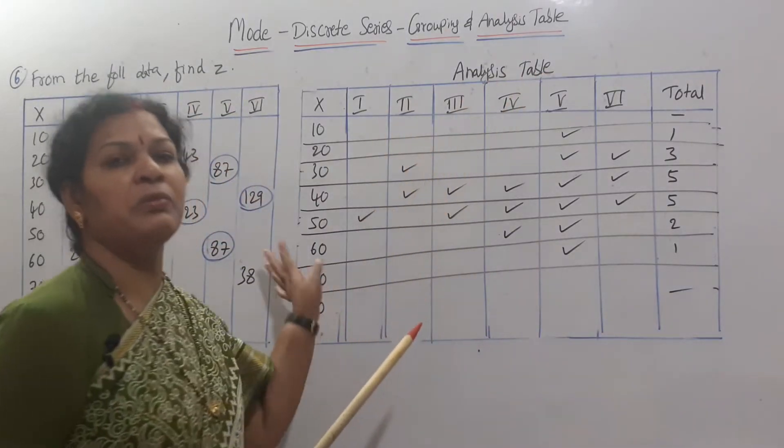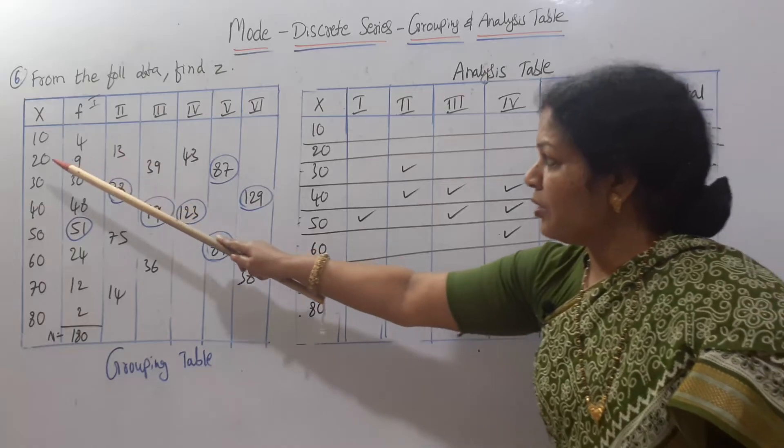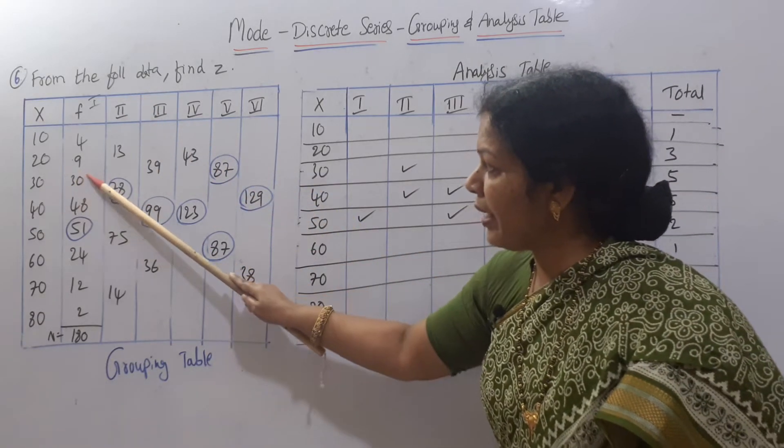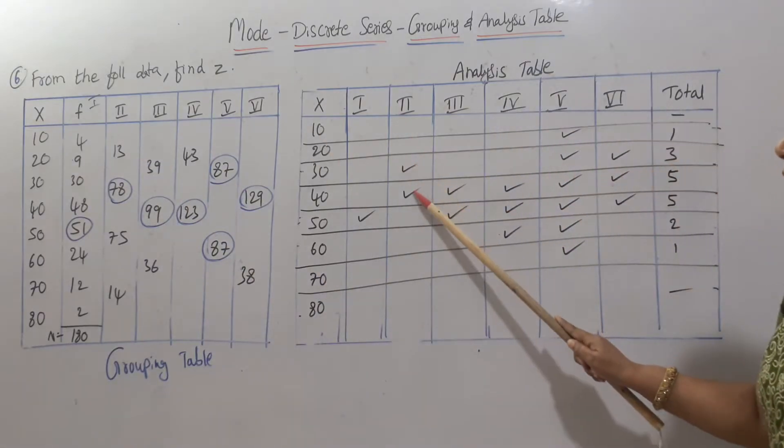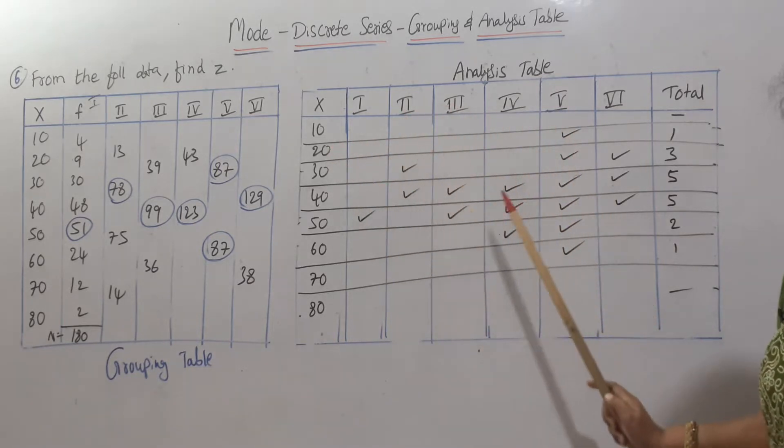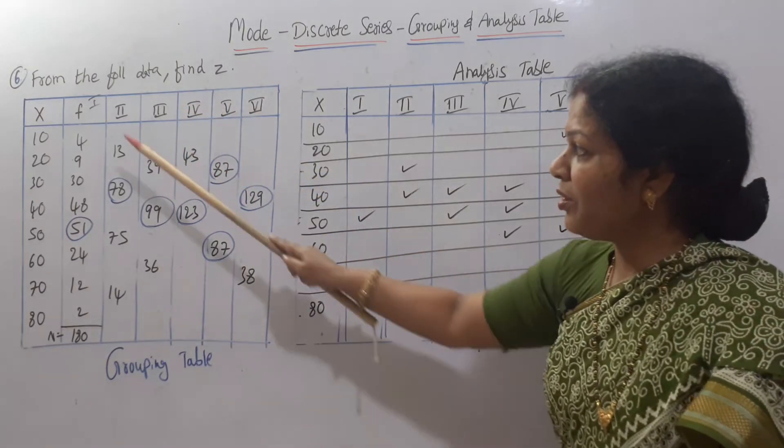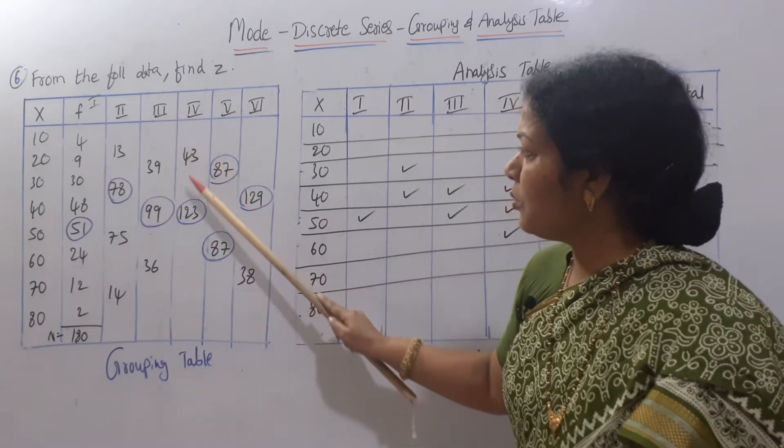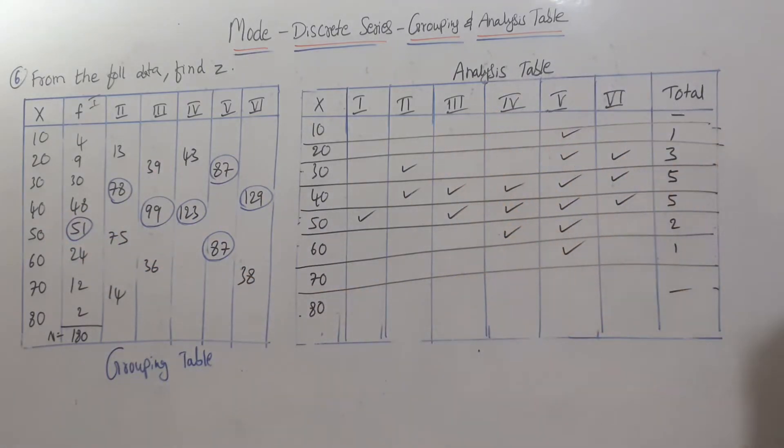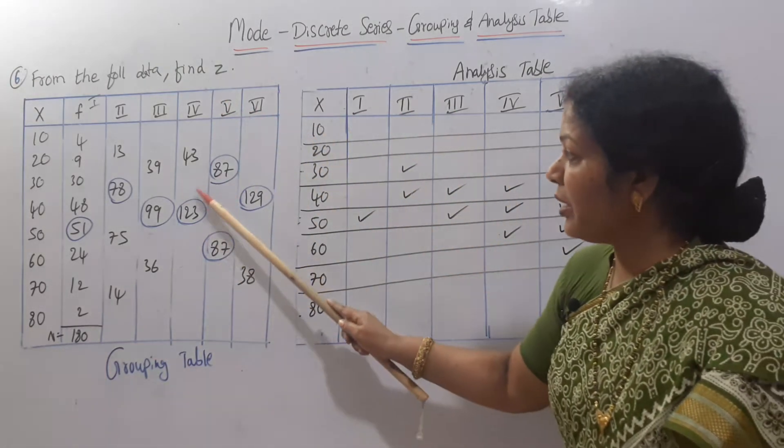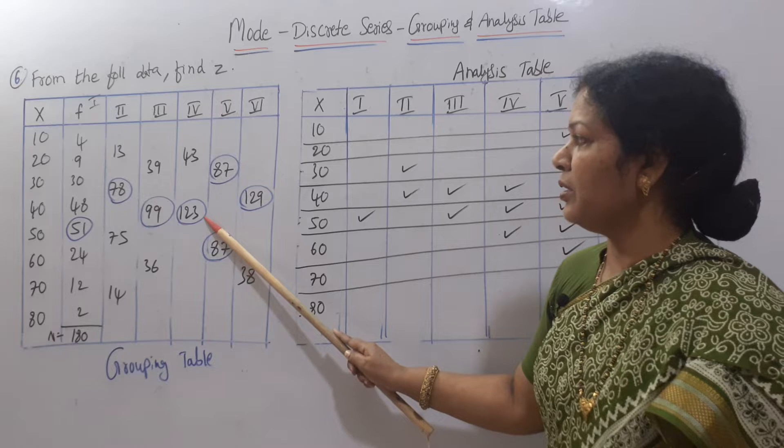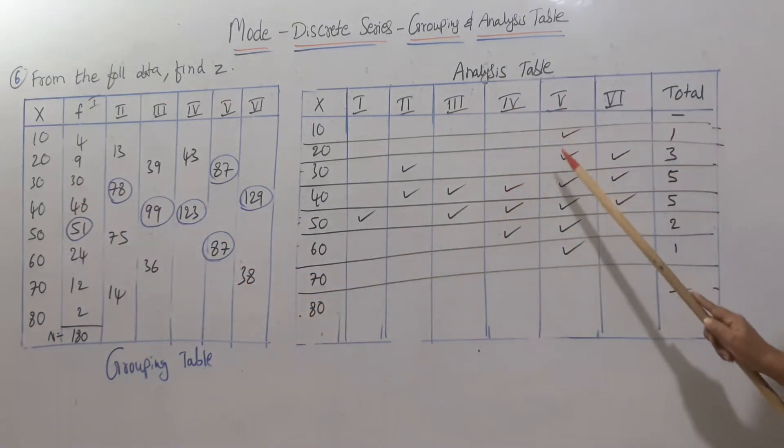In the grouping table, highest numbers we have identified: 51, 78, 99, 123. Every highest number we have rounded. In the analysis table, whichever highest is there we have given mark. In the first column, 51 means 50. Second column 78 by adding 30 and 48, so 30 and 40. Third column highest is 123, how you got by adding 48 and 51, means 40 and 50.